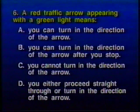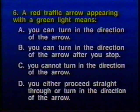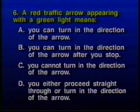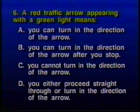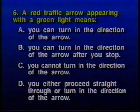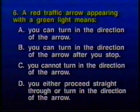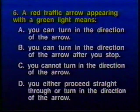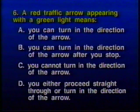Question six: A red traffic arrow appearing with a green light means — A) you can turn in the direction of the arrow, B) you can turn in the direction of the arrow after you stop, C) you cannot turn in the direction of the arrow, or D) you either proceed straight through or turn in the direction of the arrow.